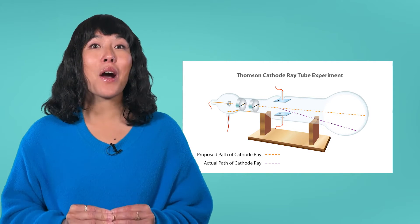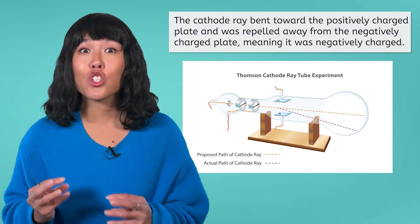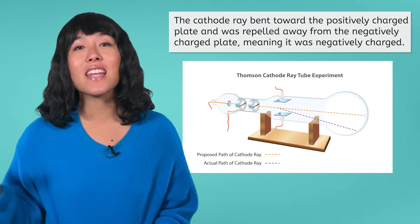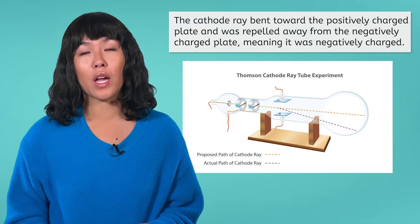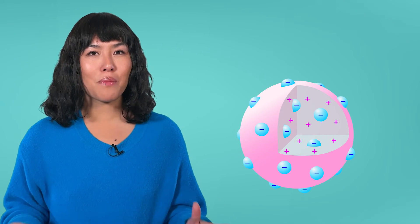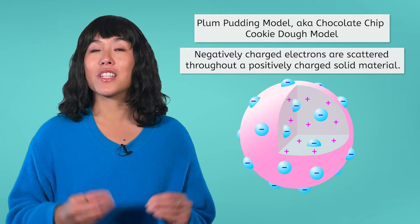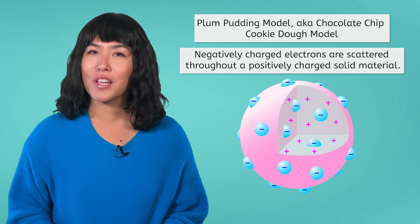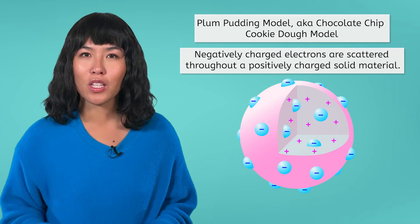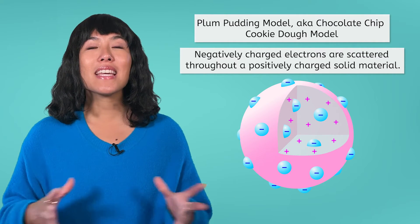However, when J.J. Thompson placed a positively charged plate below the tube and a negatively charged plate above the tube, he found that the ray was attracted to the positively charged plate and repelled by the negatively charged plate. He proposed that since the particle ray was attracted to the positive plate, it must therefore be negatively charged. After his experiment, J.J. Thompson proposed the plum pudding model — but since plum pudding isn't really a thing anymore, let's call it the chocolate chip cookie dough model. Thompson said that there were negatively charged electrons throughout an atom — these are our chocolate chips — and they are surrounded by a positively charged solid material, our cookie dough. Together, the negatively charged chips and the positively charged dough make the atom as a whole neutral.